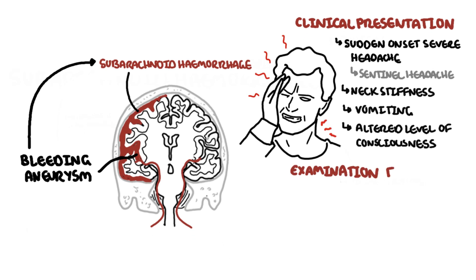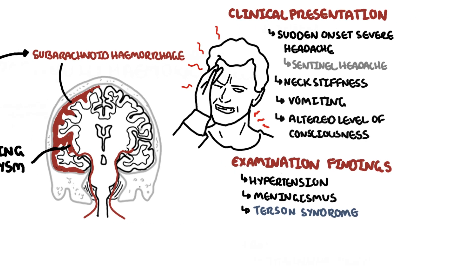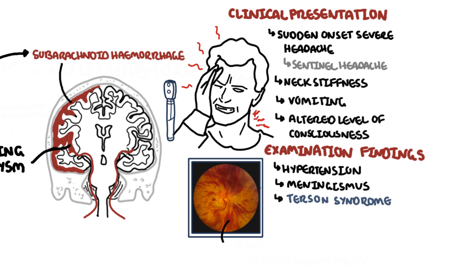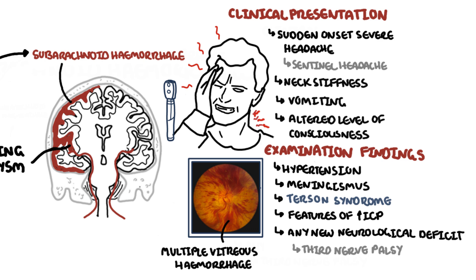Examination findings include hypertension, meningismus, neck stiffness, and photophobia. Terson syndrome is where, if you look at the back of the eye, you can see multiple vitreous hemorrhages. Patients may have signs of raised intracranial pressure and any new neurological deficit. For example, a third nerve palsy is associated with a posterior communicating artery aneurysm.